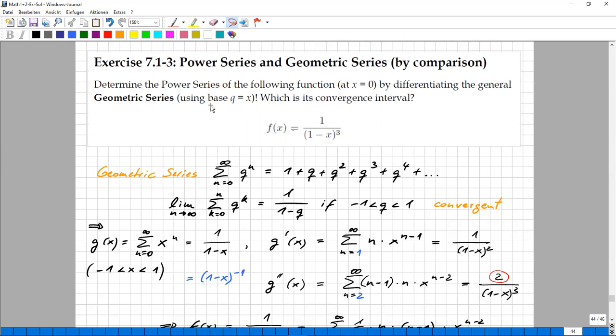This function is given: one over the quantity one minus x to the power of three. This seems to be quite a simple rational function. We look at it at x equals zero, and the idea is starting using the geometric series, but now using instead of the usual symbol q for the base in the geometric series, we replace it by x. Let's remember, here it is.